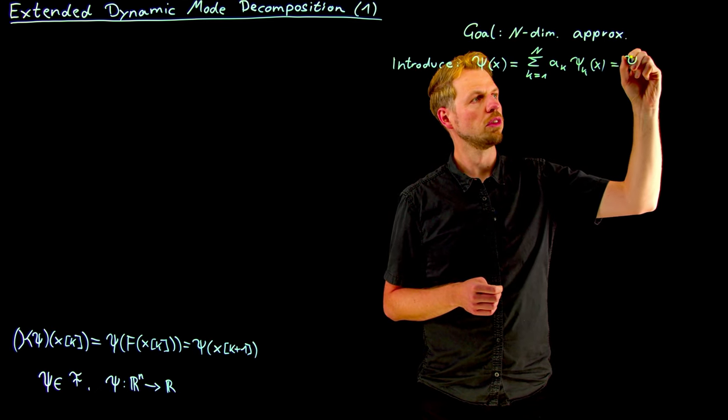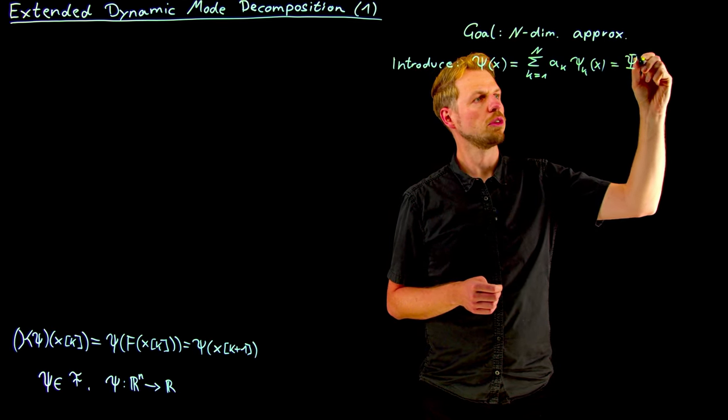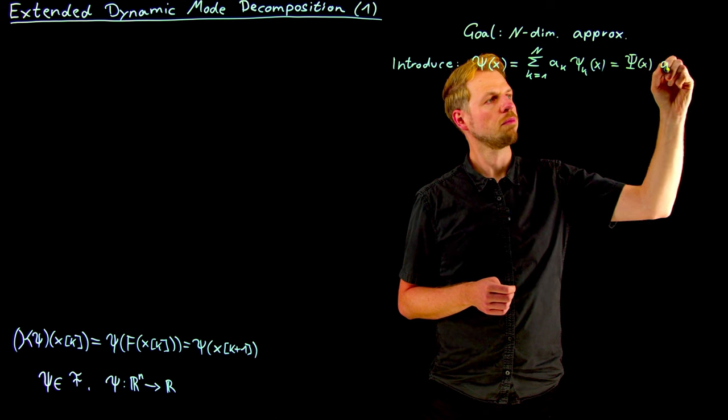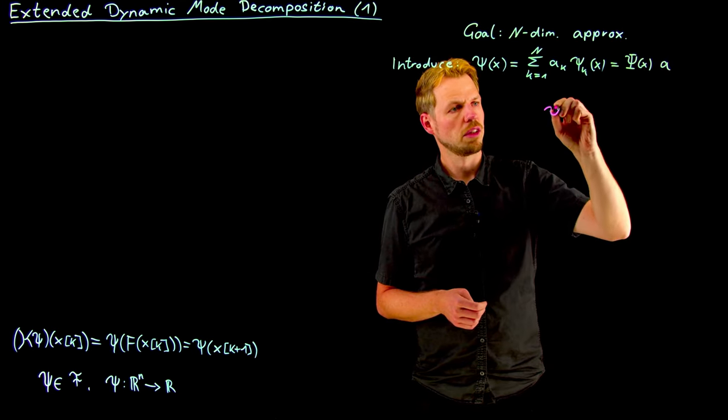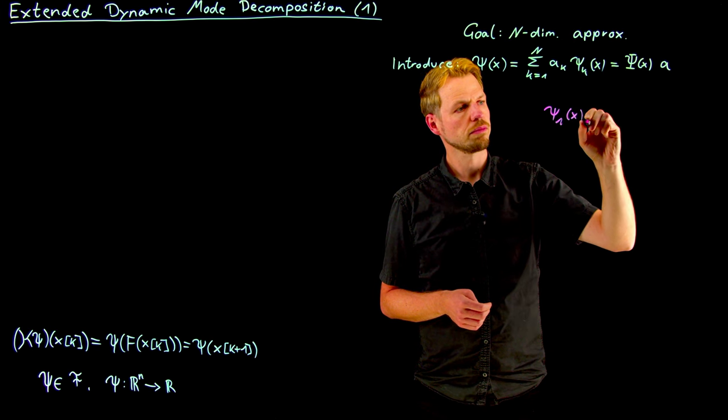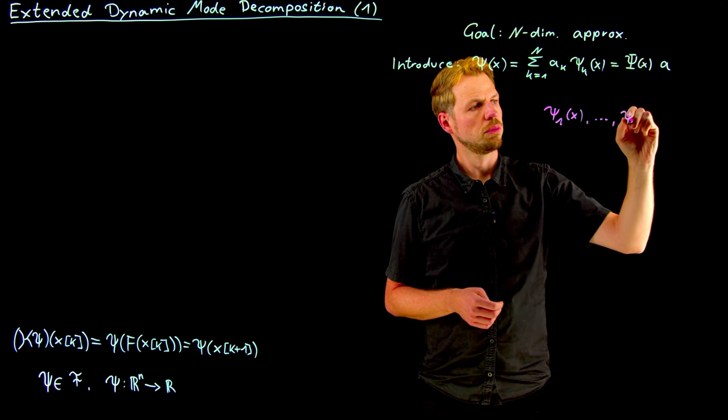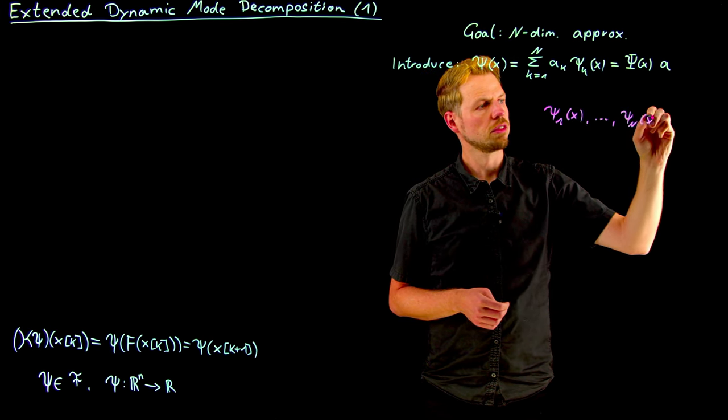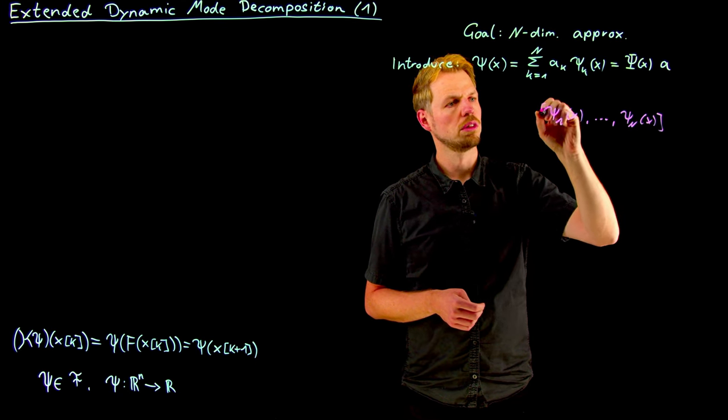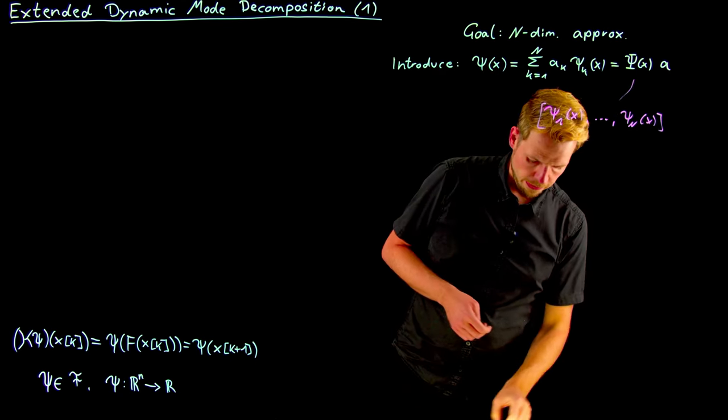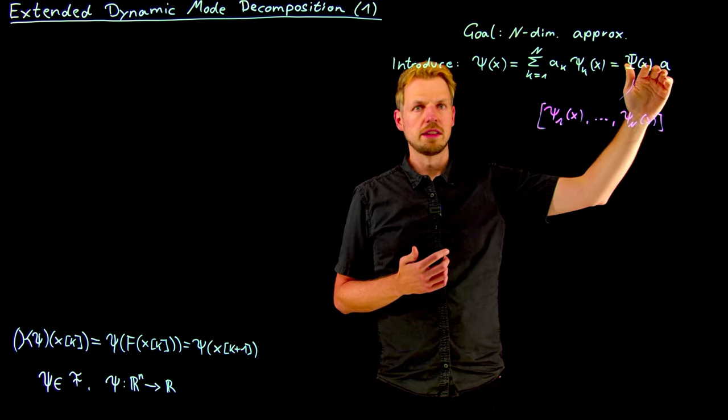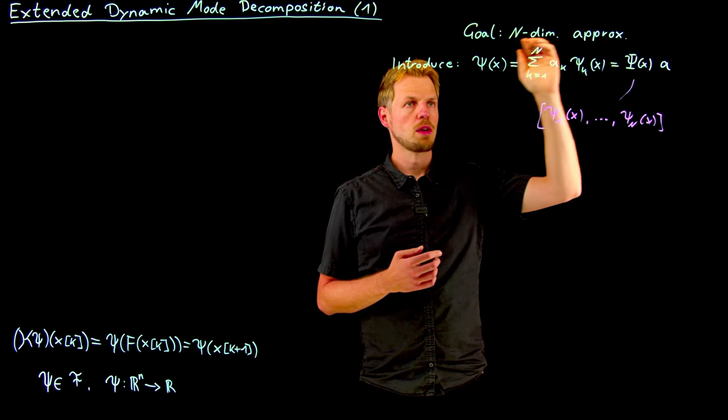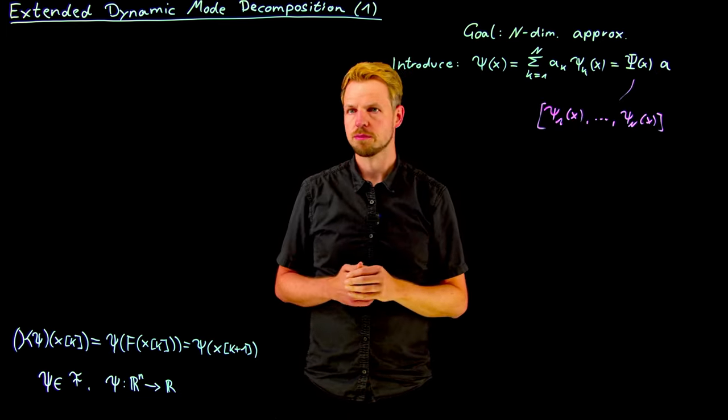I'm going to use this psi with the bars times the vector. What we get is something like psi_1 of x through psi_n of x, so we get a row vector of our measurements, the evaluation of the basis functions. Then we multiply this with the coefficient vector and we get a subspace.